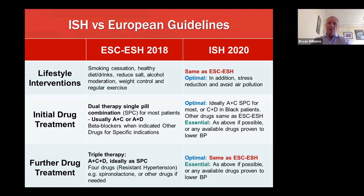In the essential arm of the ISH treatment guideline, it's recognized that all of these drugs may not be available as prescribed for optimal care, and the recommendation is that if they're not available, any drug that has been shown to safely lower blood pressure should be considered to achieve that objective.